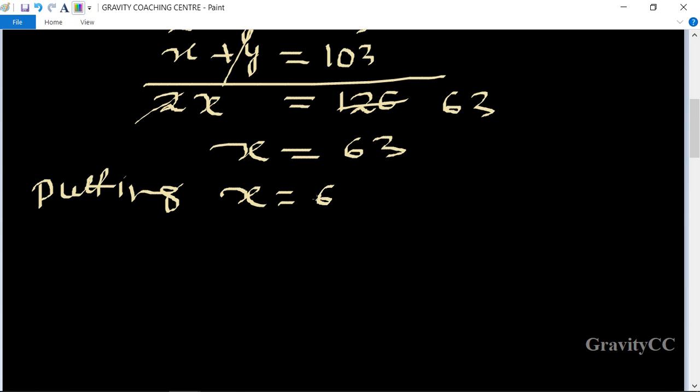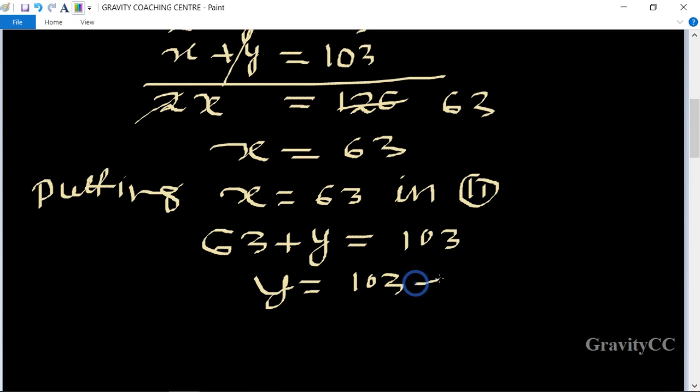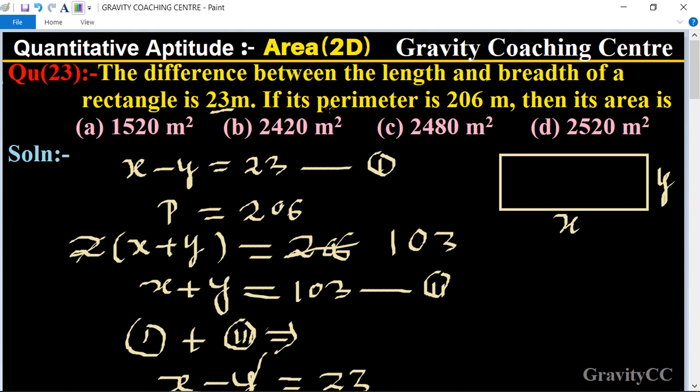Putting x equal to 63 in equation second: 63 plus y equal to 103, so y equal to 103 minus 63, equal to 40.